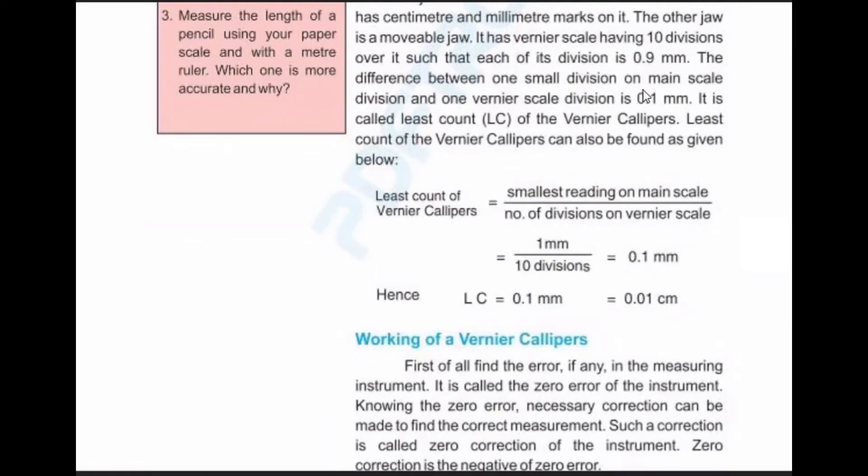It has a Vernier scale having 10 divisions over it, such that each of its division is 0.9 millimeter. The difference between one main scale division and one Vernier scale division is 0.1 millimeter. This is called the least count. LC equals 1 mm divided by 10 equals 0.1 mm equals 0.01 cm.